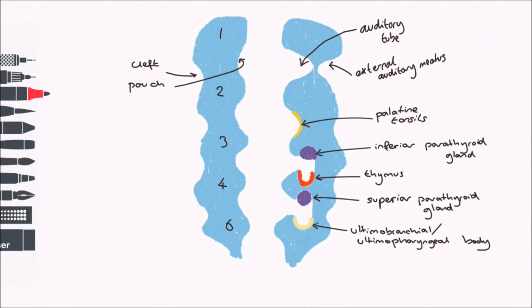Some rearrangement then occurs as the inferior parathyroid gland moves below the superior one. The thymus moves down the neck to the thorax, and the thyroid we will discuss in another video.